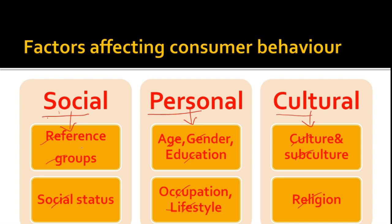The first factor is social factors. Man is a social animal, and for that, society-related factors are very important. When we want to purchase a new product, we collect information from our reference groups — our friend circles, relatives, and products we have used before. Social groups play an important role in affecting a consumer's purchasing decision.